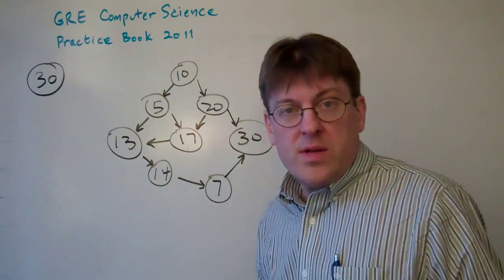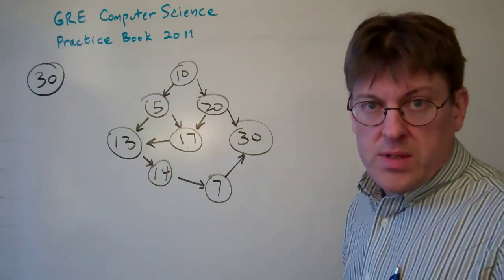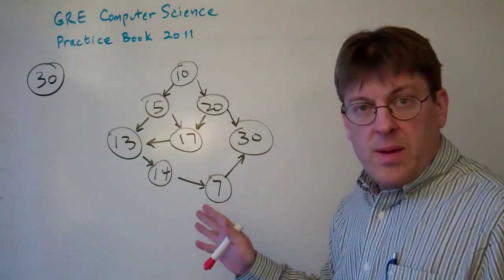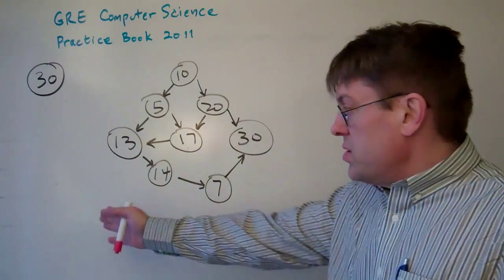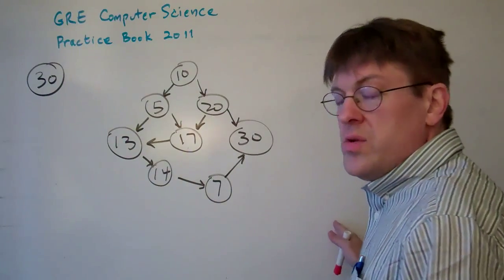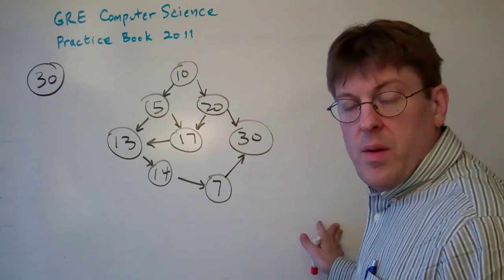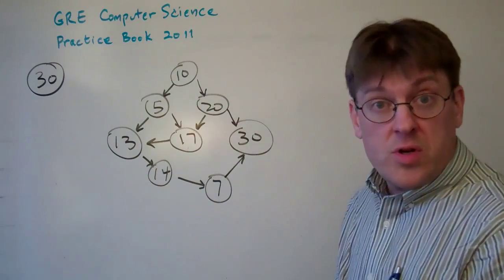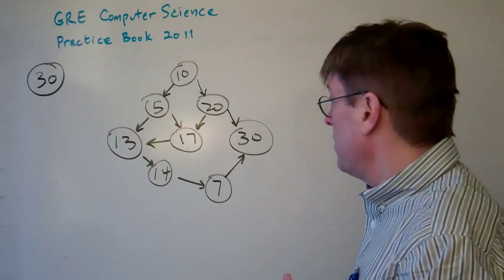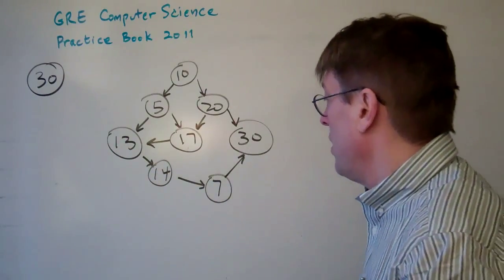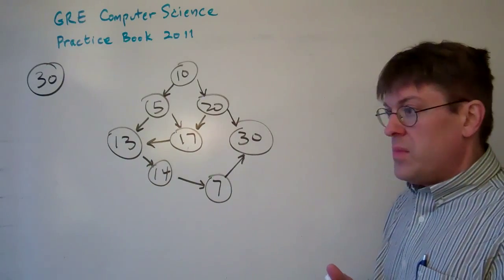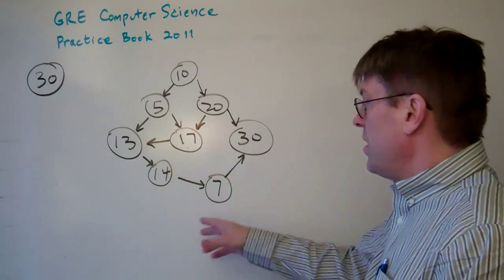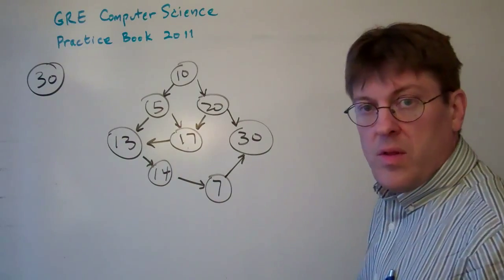Probably the easiest way is to just do a topological sort and we can see which one is right. Basically a topological sort is just putting the nodes in order by the way that they must be traversed in order to get through this path here. The earliest start node comes first and then you go to the end.